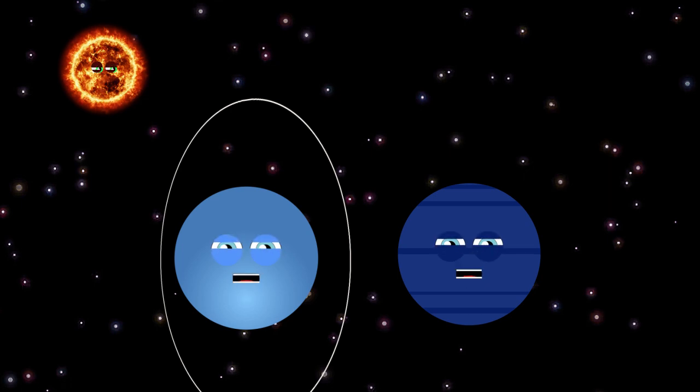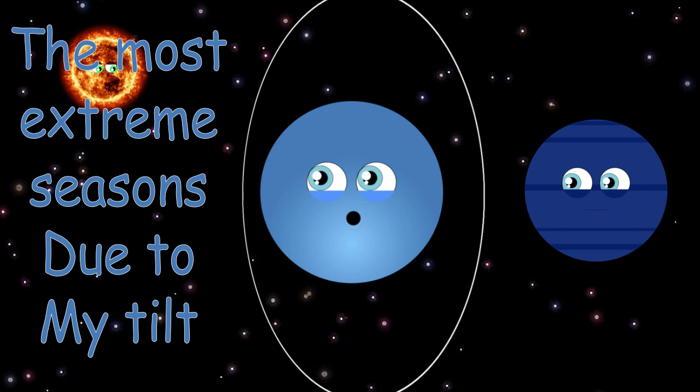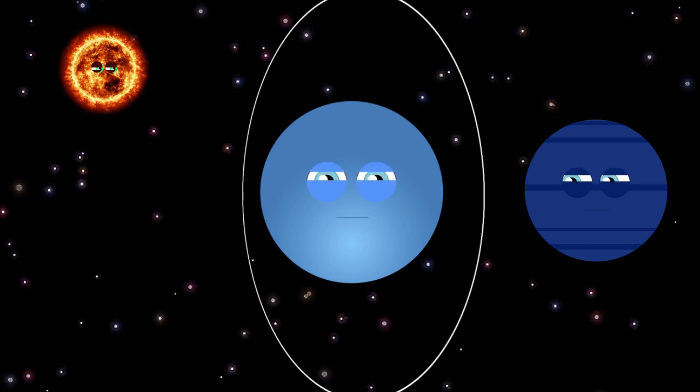My name is Uranus, I'm blue in color. I have the most extreme seasons due to my tilt. I have a lot of storms and my gravitational core is in my center, causing different gravitational influence on nearby moons or objects.